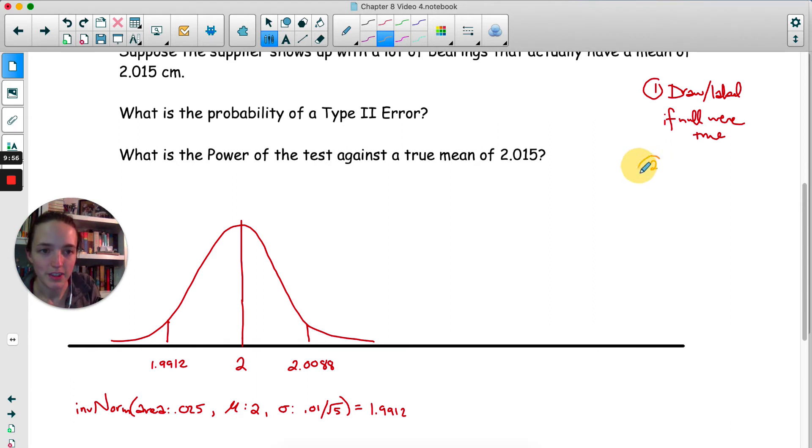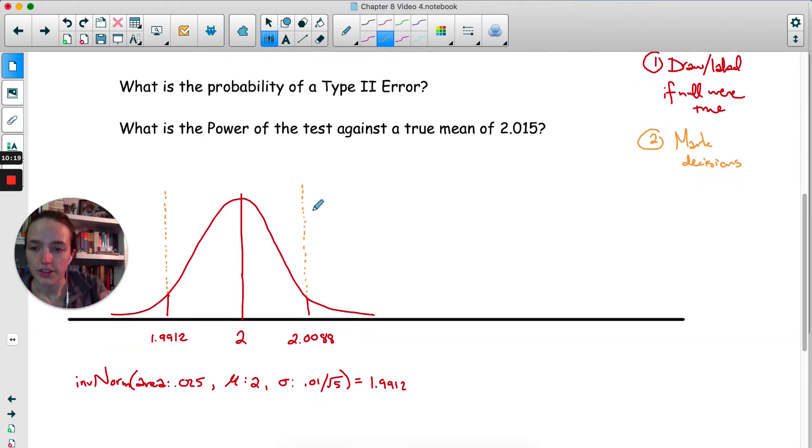Now what we're going to do is mark the decisions. I'm going to extend this up. And I'm just going to mark off what qualifies as rejecting and what qualifies as failing to reject. In this example, we are rejecting if we get anything starting right here and to the left. And we're rejecting if we get anything above here. That means anything in the middle, if we get any x bar in the middle, we will fail to reject.